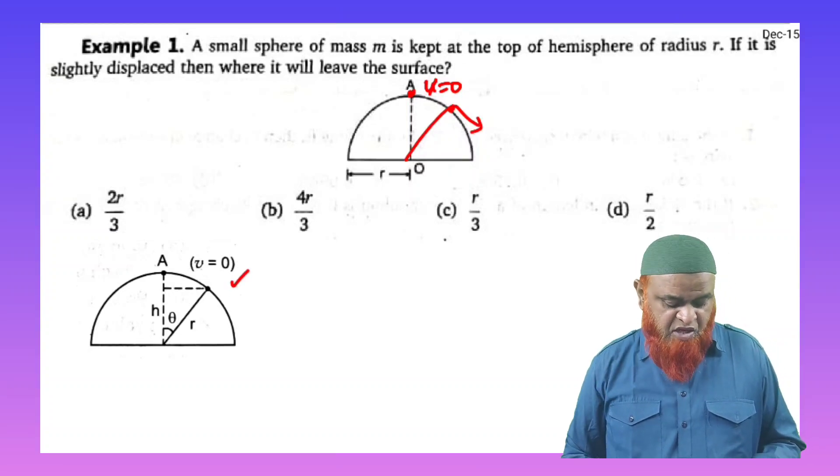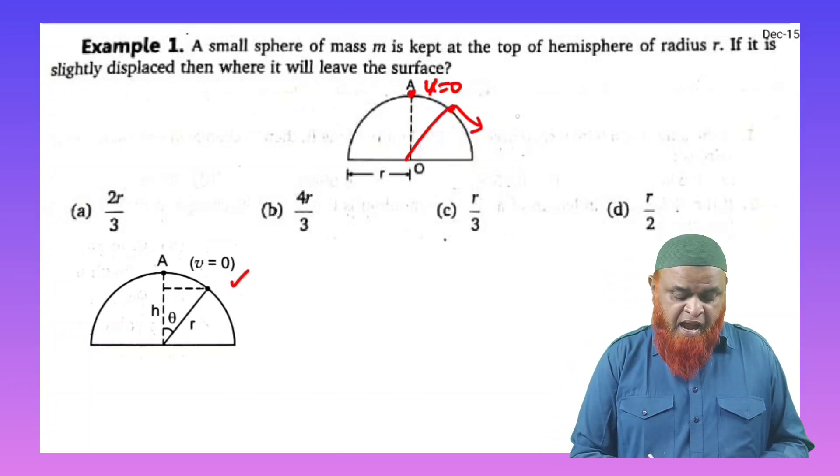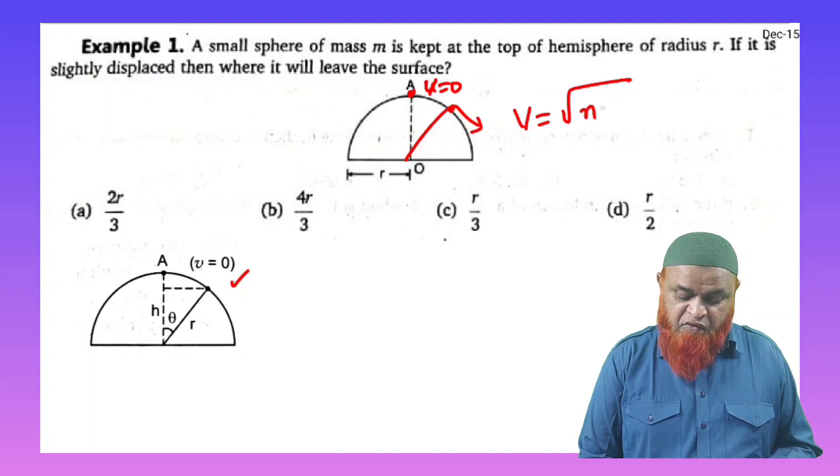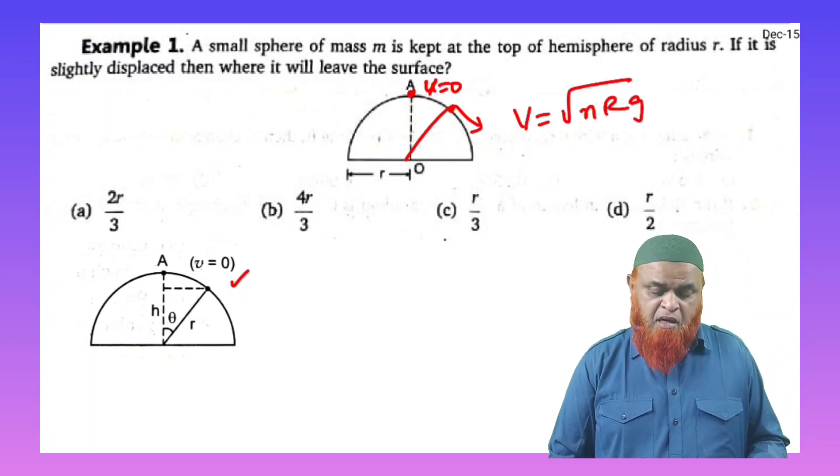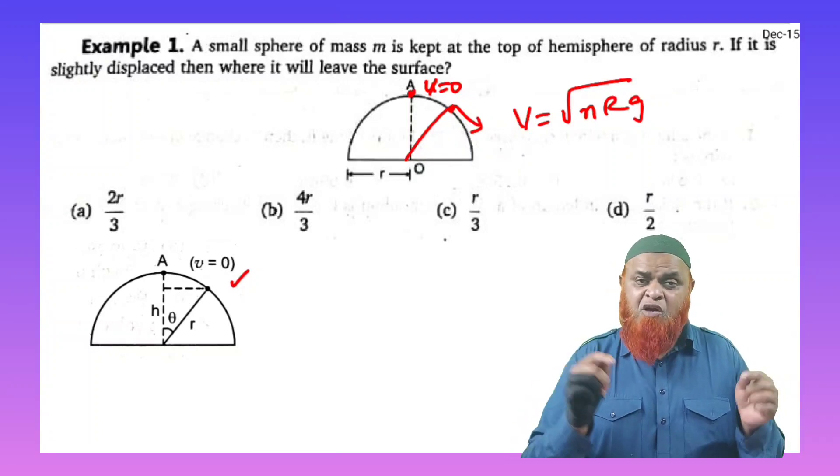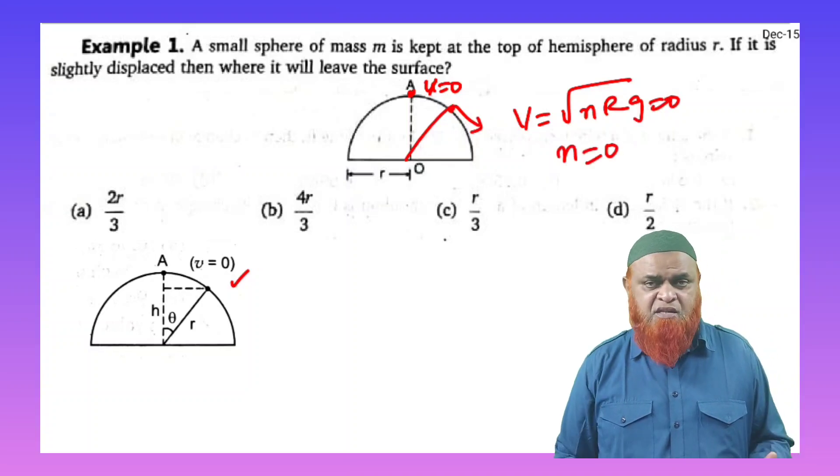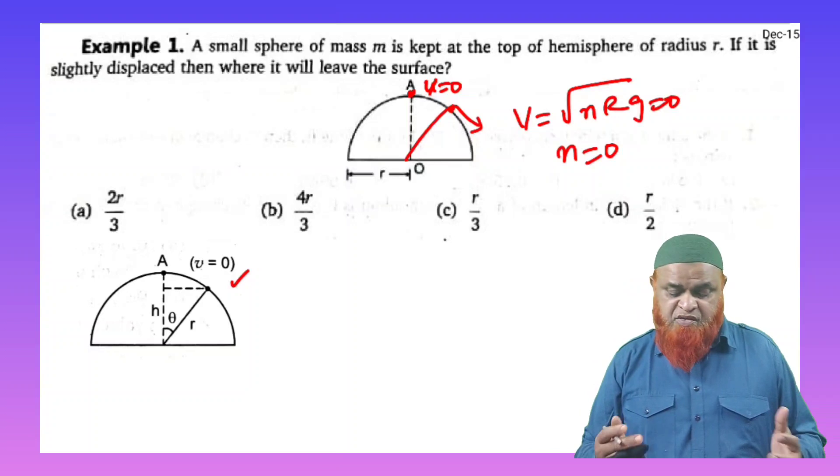Here one more diagram is given in which velocity of a body is given 0 here and you all know that if you are going to consider the velocity, velocity is considered to be nRg, like 5Rg, 3Rg, 2Rg, whatever it may be. But as the velocity is going to be 0 here, therefore n is also considered to be 0 here at this place.